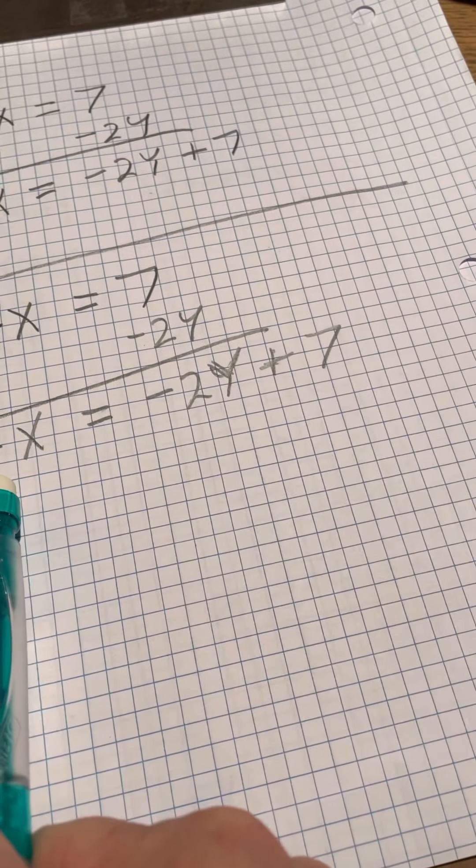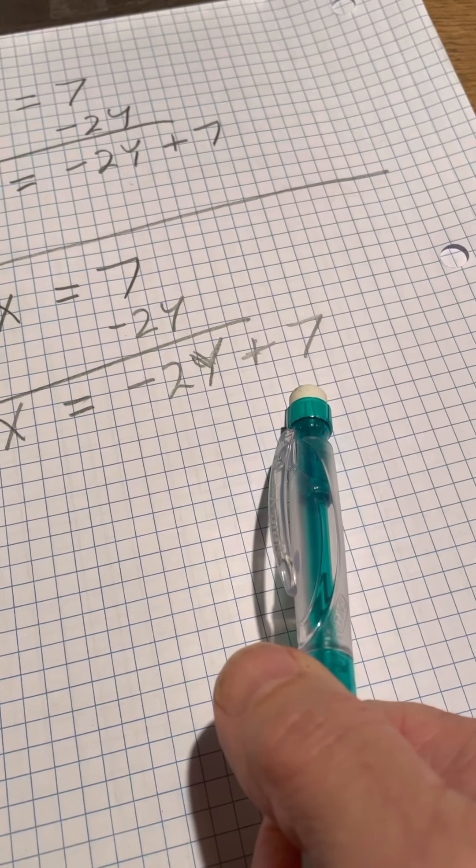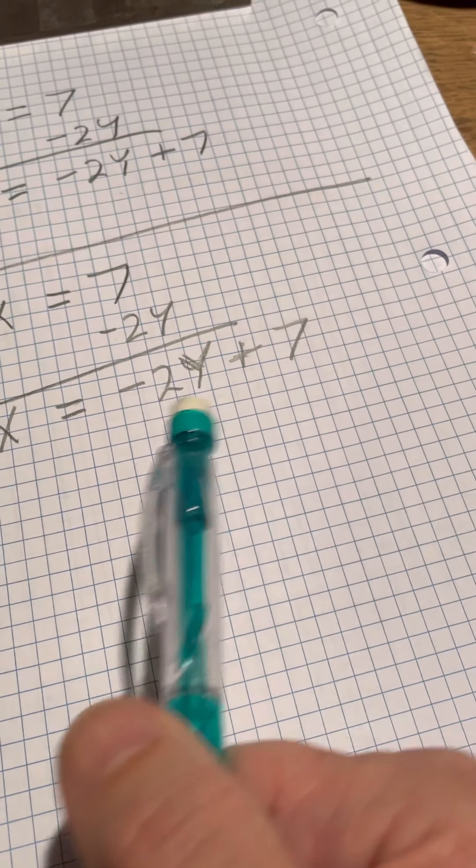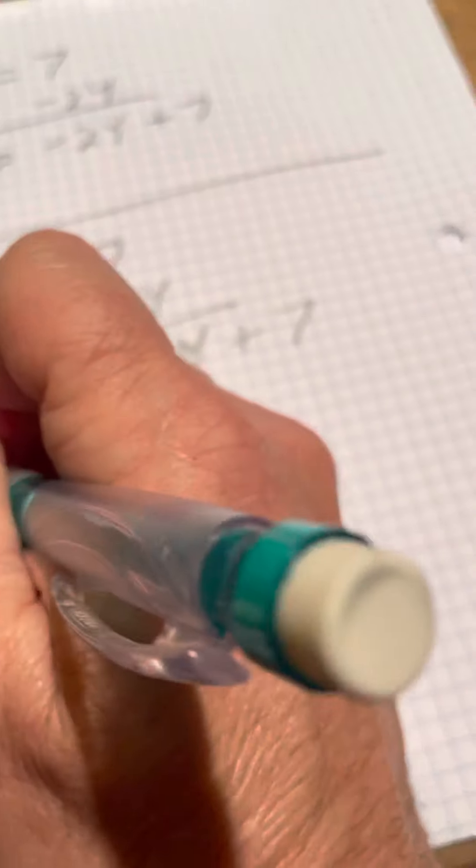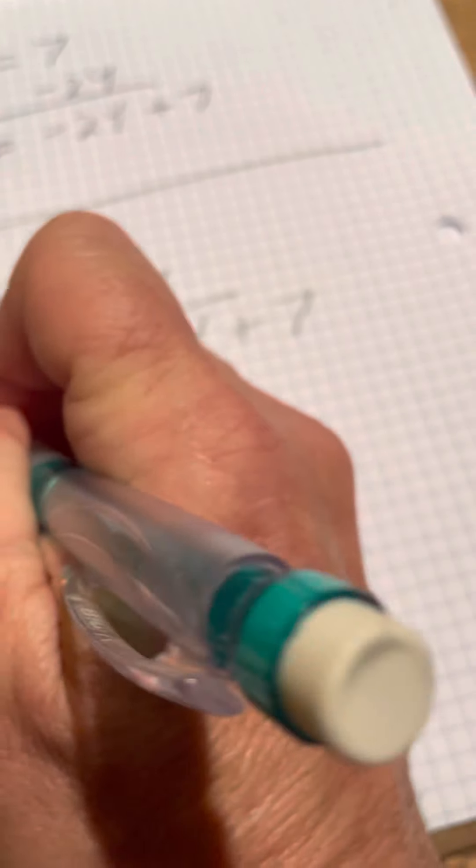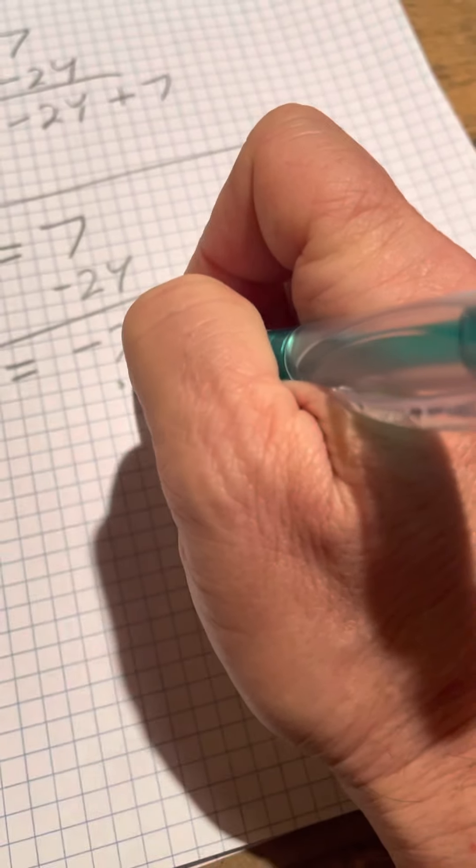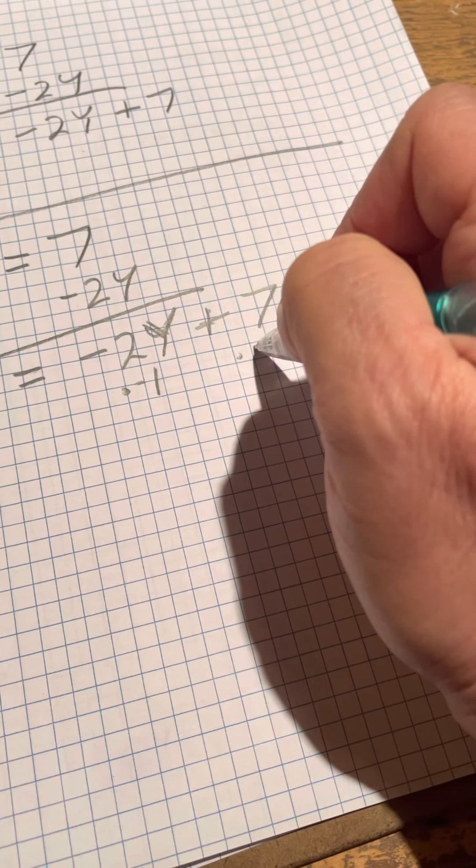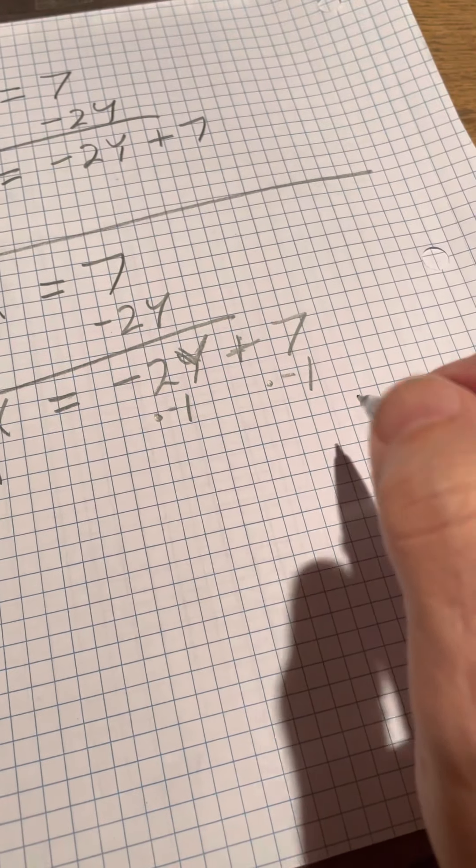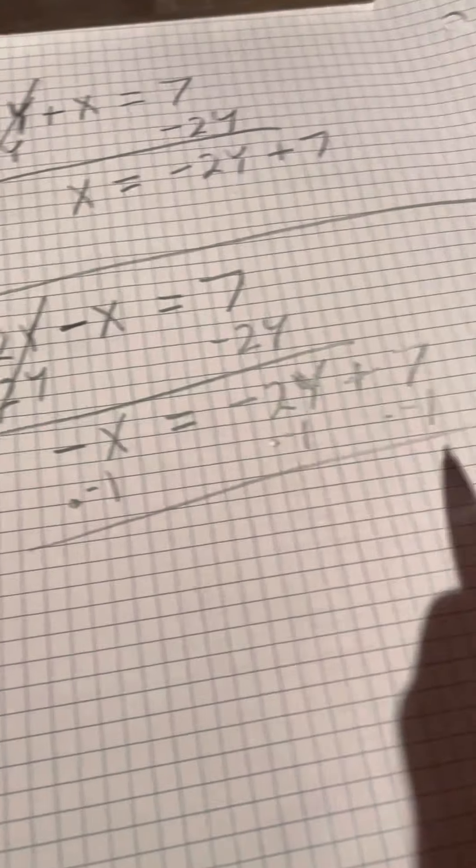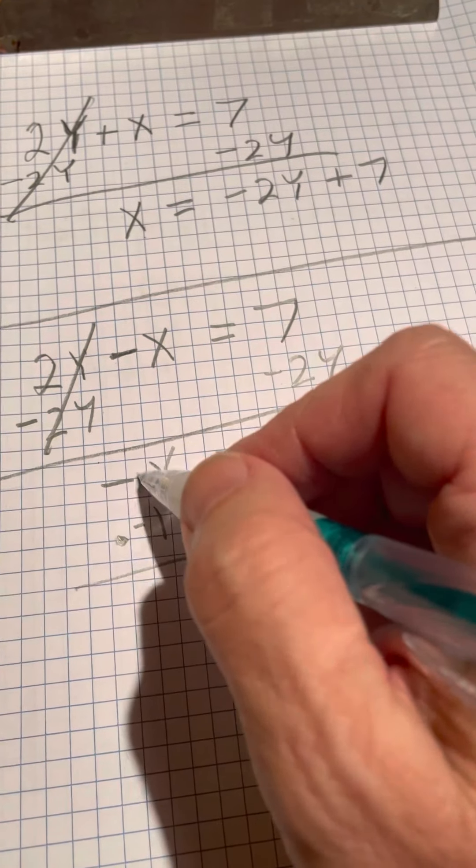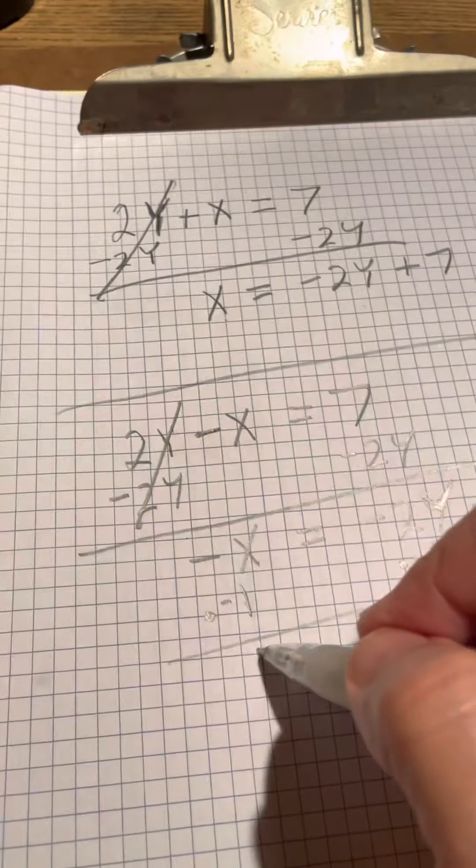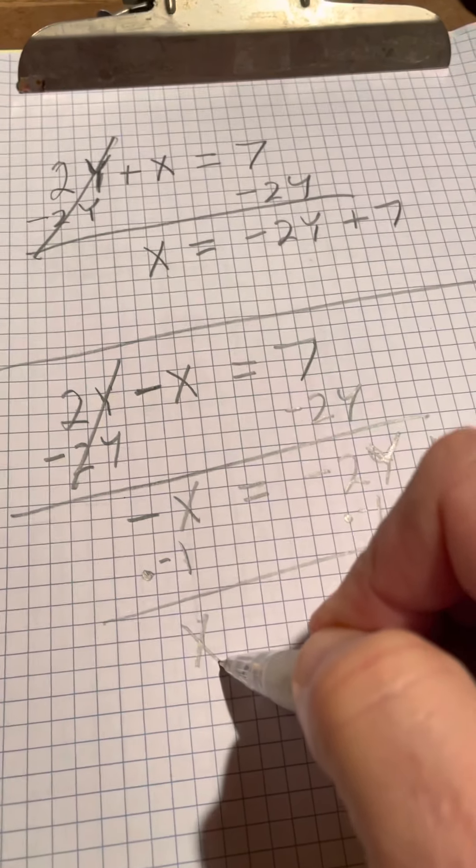Remember I told you you can do whatever you want to one side as long as you do it to the other. So the easiest way to fix this is to multiply by negative 1 on both sides, and since math is fair, you have to do this to negative 1 on all three of those. So right here, what's negative 1 times negative 1? Just 1, or 1x, or just x.